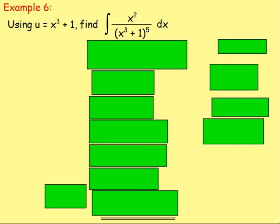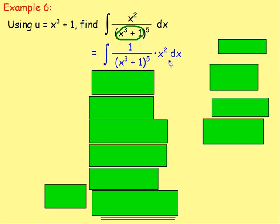Example 6: using u equals x cubed plus 1, find the integral of x squared over (x cubed plus 1) to the power of 5. What you want to do is think: u equals x cubed plus 1, so I'm replacing that part with u. In the bottom I would have u to the power of 5. Taking x squared to the side, I would have 1 over (x cubed plus 1) to the 5, with x squared dx. I need to find out what x squared dx is in terms of u, because the bottom becomes u to the power of 5.